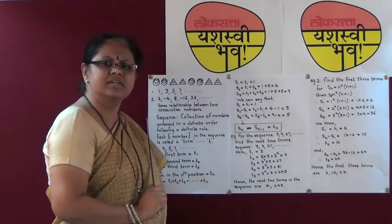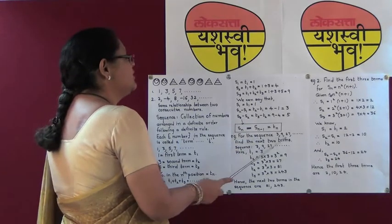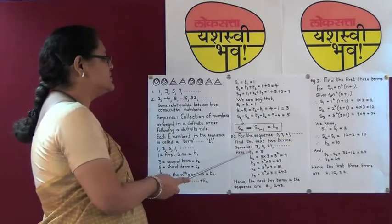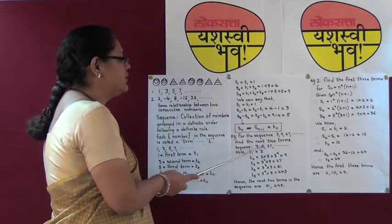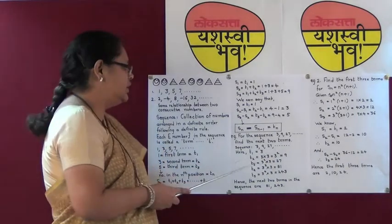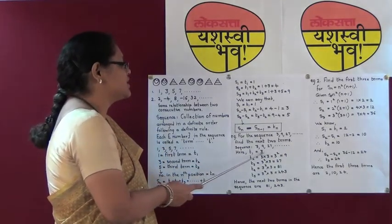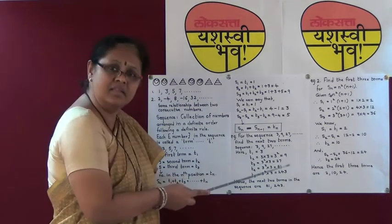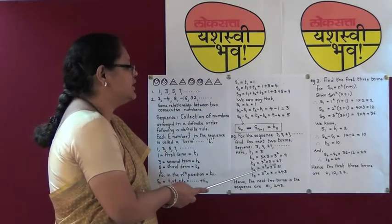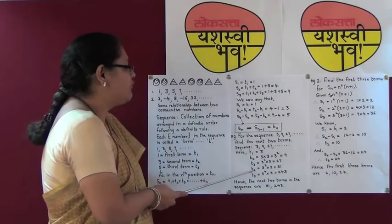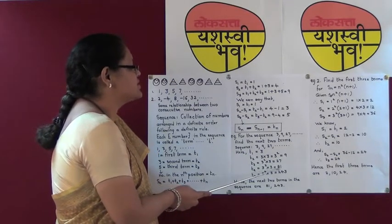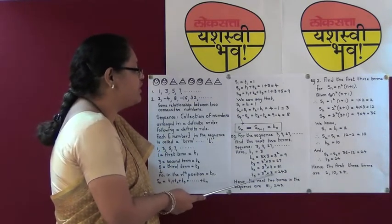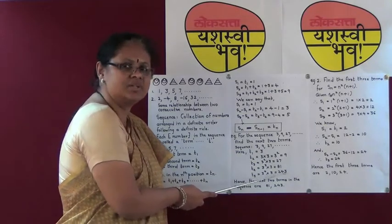Consider the sequence 3, 9, 27 and so on — find the next two terms. Here t1 is equal to 3. t2 is equal to 3 into 3, that is 3 squared, which is 9. t3 is 3 squared into 3, that is 27. So t4 would be 27 into 3, that is 81, and t5 would be 81 into 3, that is 243. The next two terms in the given sequence are 81 and 243.